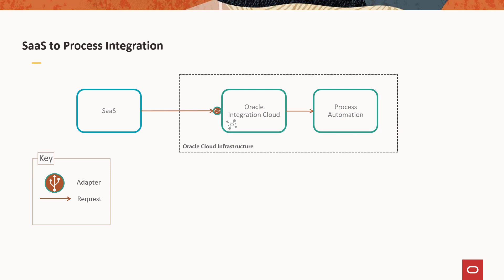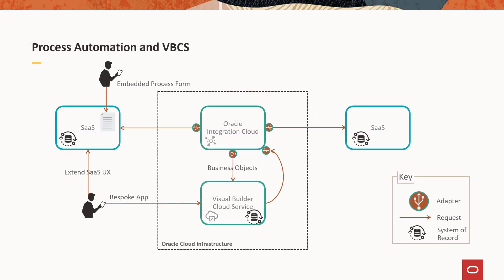It's also possible to kick off whole business processes from within Oracle Integration using the process capability to create longer-running integrations that involve human approvals. Similarly to embedding process forms, we can do the same with Visual Builder — embedding Visual Builder forms and screens into existing applications. This gives the option to either extend the SaaS user experience or create custom apps. A common use case is using Visual Builder to create a mobile application for functions that aren't mobile-enabled, with Visual Builder taking advantage of adapters in Oracle Integration to update or retrieve data from SaaS applications.